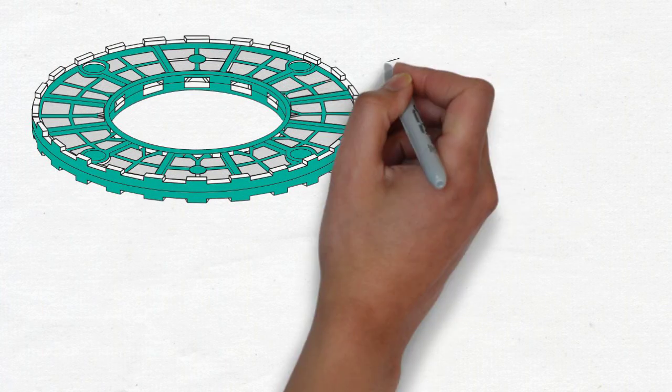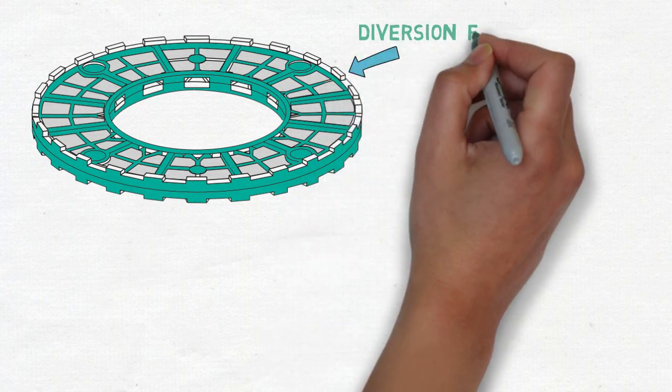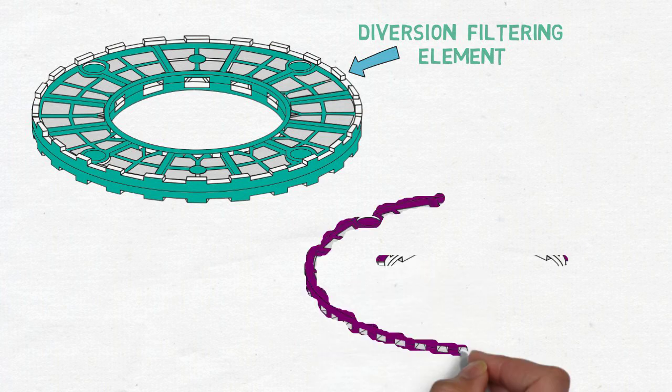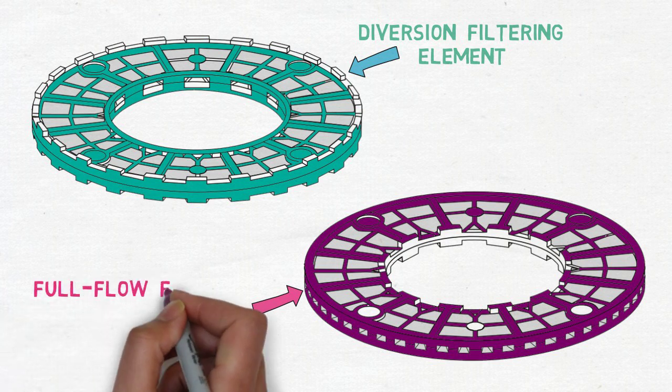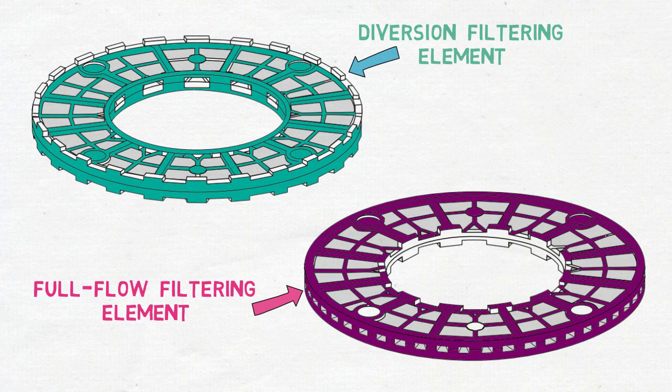The filter consists of two types of filtration elements. One is known as diversion filtering element. The other one is called full flow filtering element. Both are different in construction as you may see in the picture.